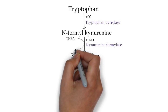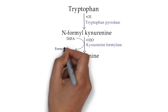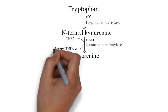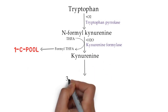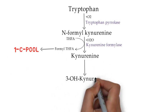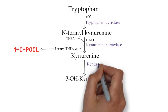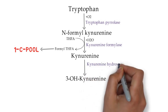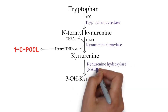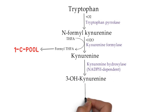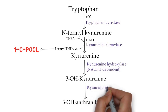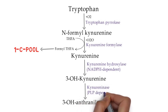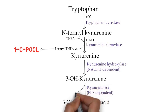N-formyl kynurenine is hydrolyzed to kynurenine by kynurenine formylase, and the formyl group is incorporated into tetrahydrofolic acid, entering the one-carbon pool. Then kynurenine undergoes hydroxylation to form 3-hydroxy kynurenine by NADPH-dependent kynurenine hydroxylase.